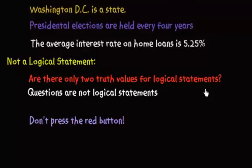Our next example: don't press the red button. Again, it sounds a bit silly if someone says 'Don't press the red button' and you respond with 'True.' That doesn't really make sense. 'Don't press the red button' is an order — a command, an instruction to do or not do something. It does not carry any factual information. So commands or instructions are not logical statements.